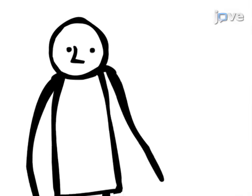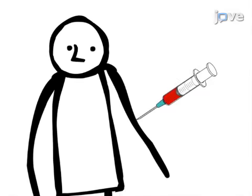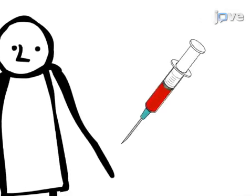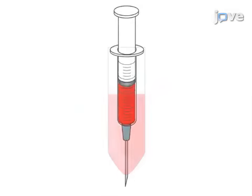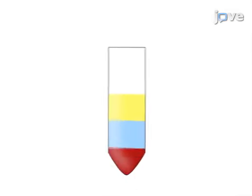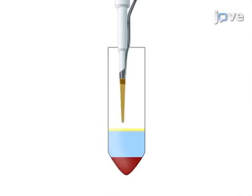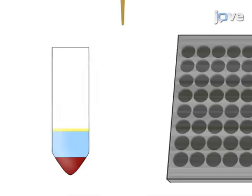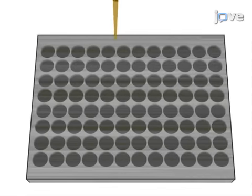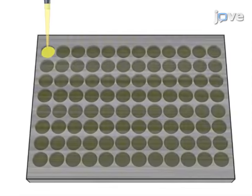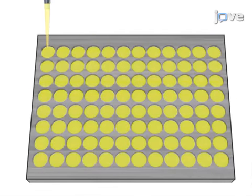The second step is to add the patient sample along with serial dilutions of target peptide HLA monomers to generate a standard curve, which allows for quantification of the target antigen in patient samples.